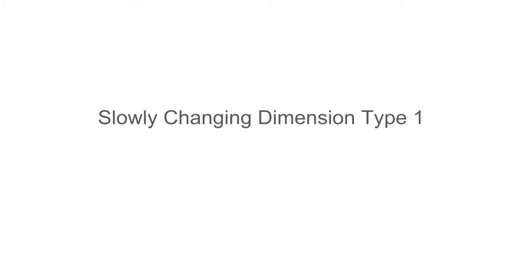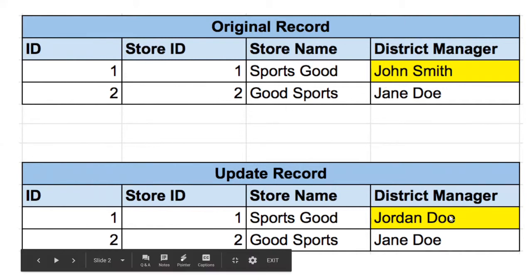Let's go over slowly changing dimension type one. All it really does is update the information. So let's say you have a dimension table that keeps track of a store, and part of that is keeping track of a store manager. I'll use the name rather than an ID because people understand names more. In the original record, store ID one had district manager John Smith, and then at some point store ID one changed to Jordan Doe.